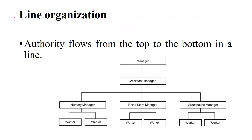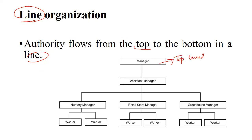Line organization means authority flows from the top to the bottom in a line. It is important to understand the organization structure, which includes the line of work and the line of communication. In a line organization, authority and responsibility flow directly downward.